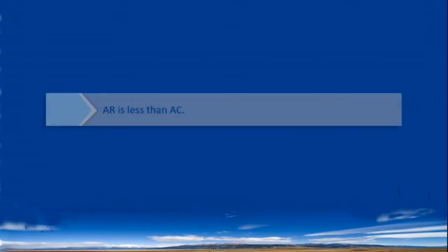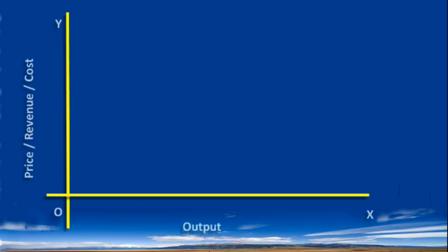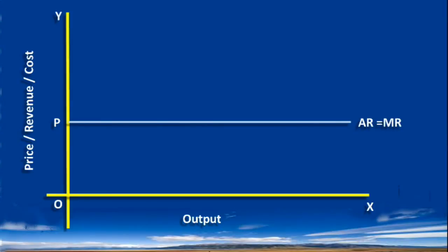Condition for loss is Average revenue is less than average cost. As it is a competitive firm, it accepts the price determined in the industry. Its average revenue curve is horizontal. It is perfectly elastic. Marginal revenue curve coincides with it.